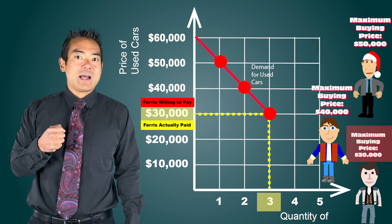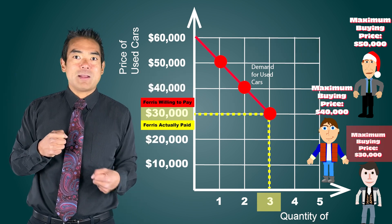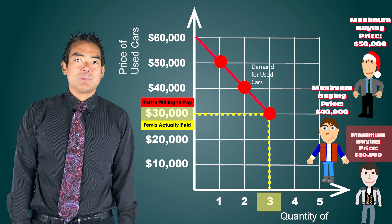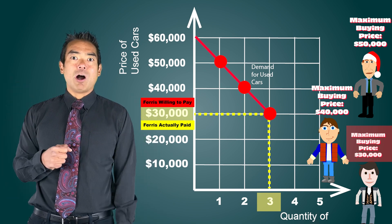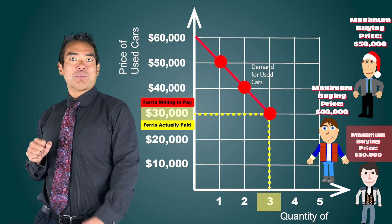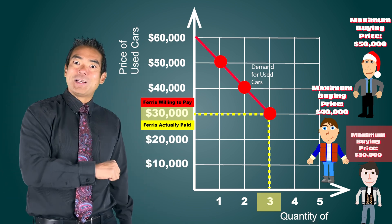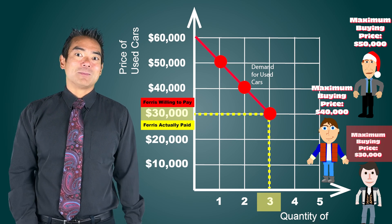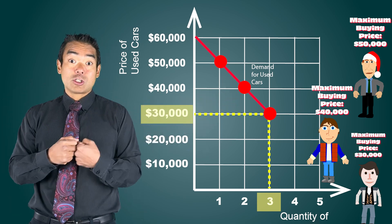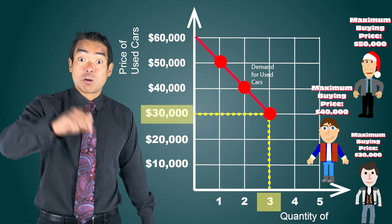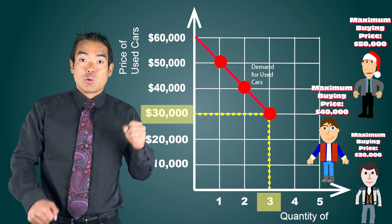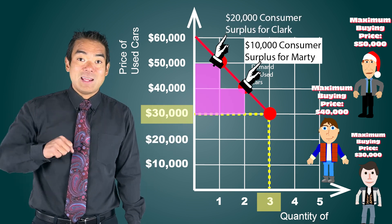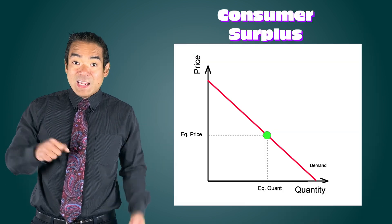Ferris was willing to pay $30,000 and he paid $30,000, so he didn't get any consumer surplus — but there's nothing wrong with that. It's perfectly fine to pay the price you're willing to pay to get the thing you want. In this market, total consumer surplus is $30,000: $20,000 to Clark and $10,000 to Marty.